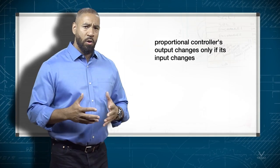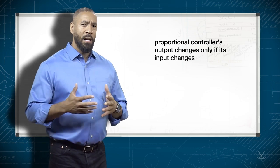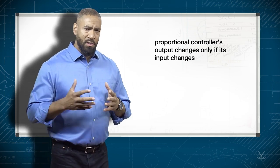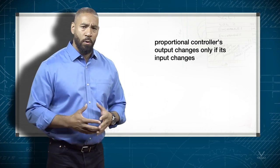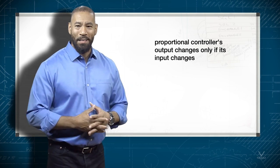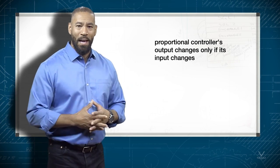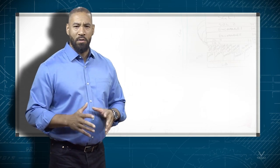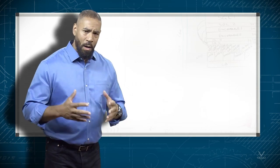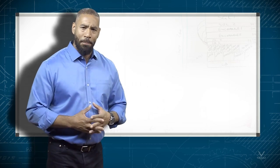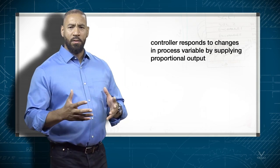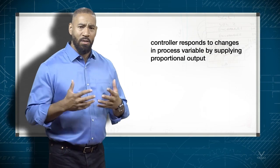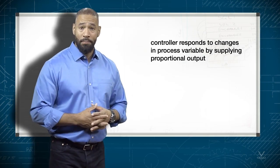A proportional controller's output changes only if its input changes. This is characteristic of all proportional controllers. We've just seen one simplified example of how a controller can be designed for proportional control. Other controllers may have different mechanisms and may balance themselves in different ways, but the result is always the same. The controller responds to changes in process variable by supplying a proportional output.